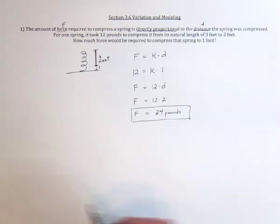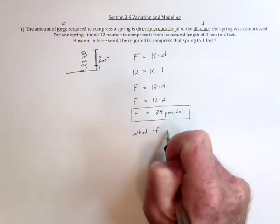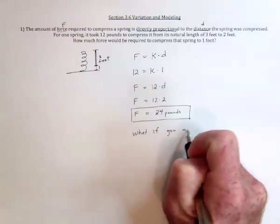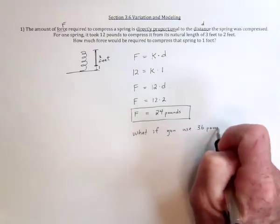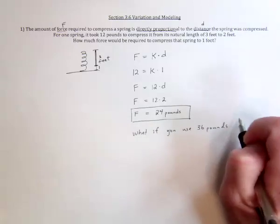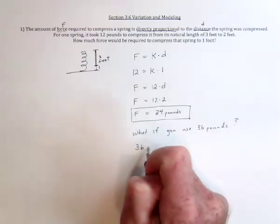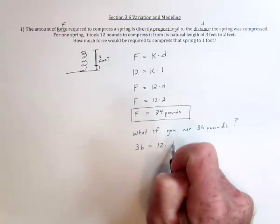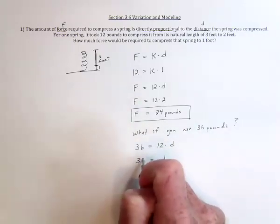And then just out of curiosity, what if you've got a bigger child that weighed 36 pounds? So we would have 36 equals 12 times D. And solving for D, we get the distance is three feet.